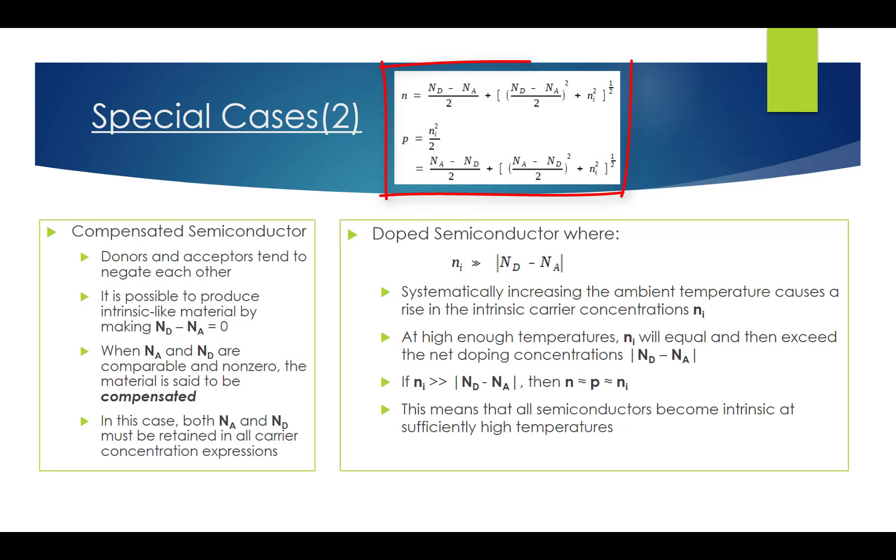In summary, the general case expressions can always be used to calculate the carrier concentrations if the semiconductor is non-degenerate and the dopant sites are totally ionized. The simplified relationships in the second special case have the greatest practical utility. Thank you for watching. Please continue to the next video in the playlist.